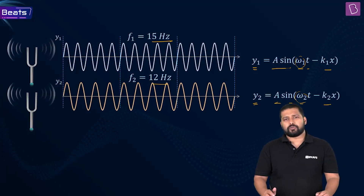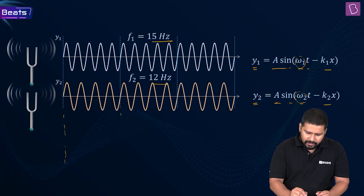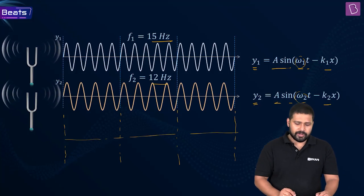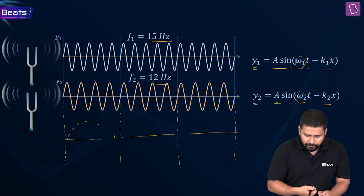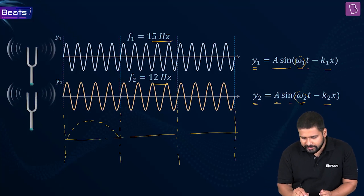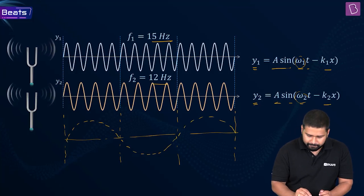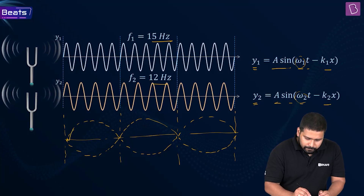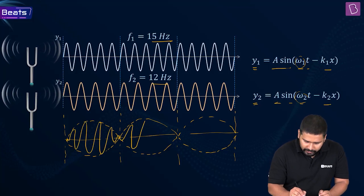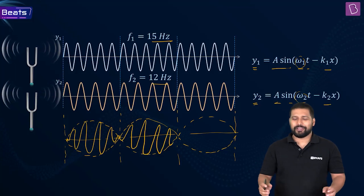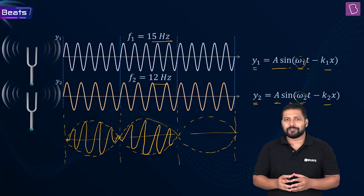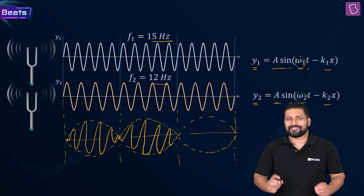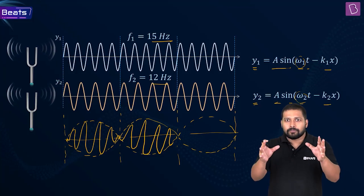When they superimpose, you get a resultant wave that looks something like this — a wave pattern that repeats itself. The beat sounds like: loud, then it comes down, again loud, again it comes down, again loud, again it comes down. That is what we call beats — like boom, boom, something like this.